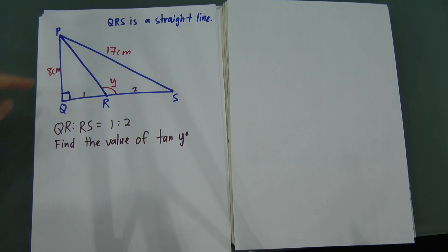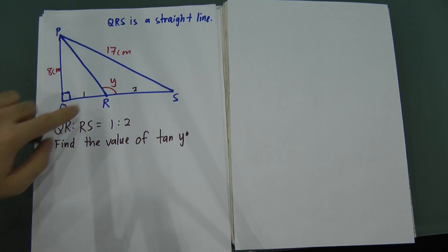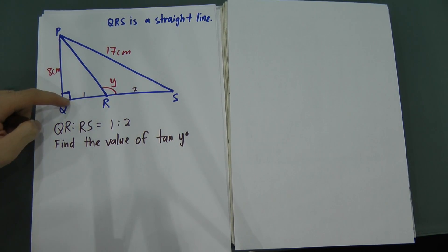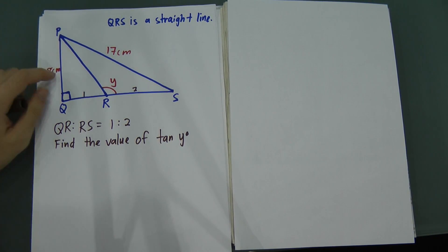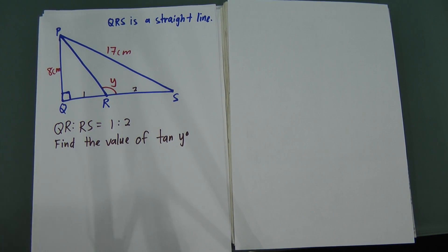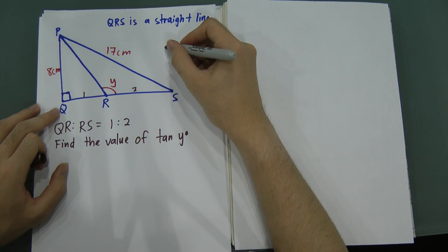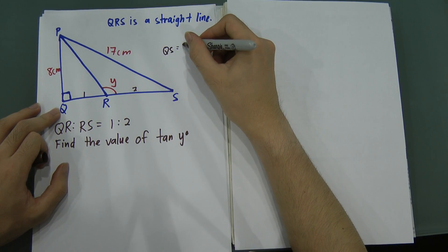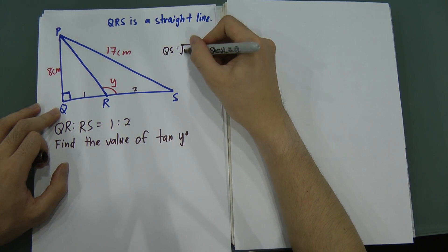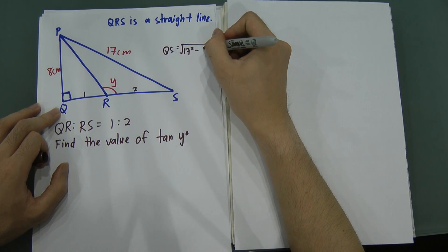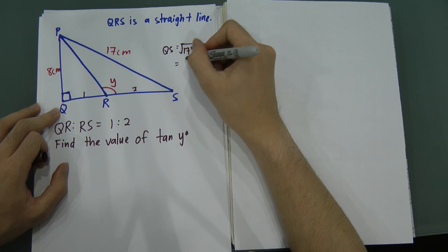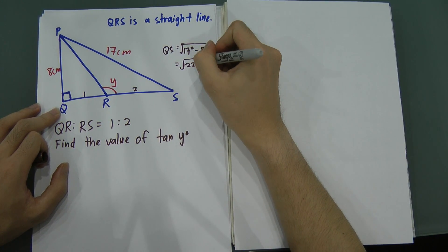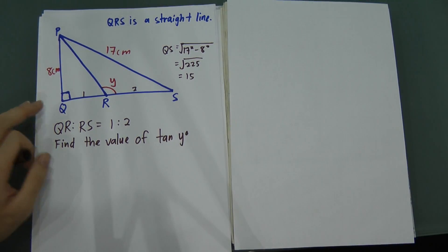We can easily find the length here because this triangle has a 90-degree angle, meaning it is a right triangle. When it's a right triangle, we can apply the Pythagorean theorem to find the length. So the length from R to S equals the square root of 17 squared minus 8 squared, which gives the square root of 225.